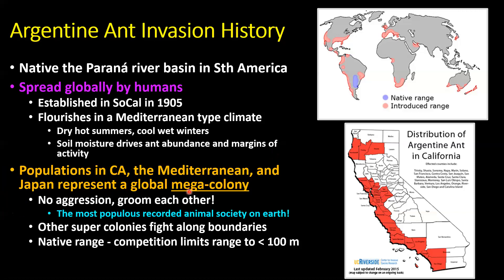One interesting thing about the Argentine ant is that populations in California, the Mediterranean, and Japan represent a mega colony — they're all very closely related genetically, won't fight each other, and will even groom each other. Scientists have suggested this is the most populous recorded animal society on earth given the vast numbers and huge range. In their native range in South America, however, they have very small foraging ranges of about 100 meters because they face competition from other ant species.